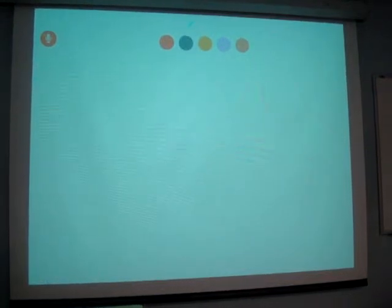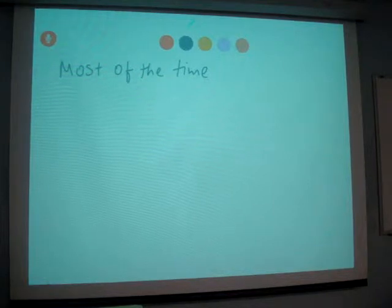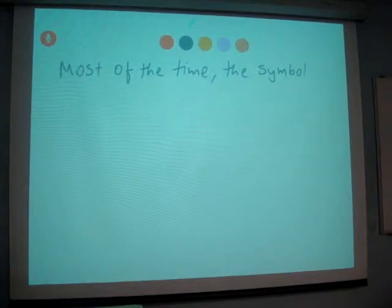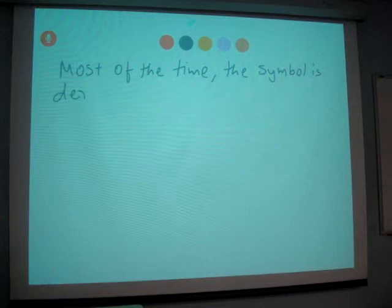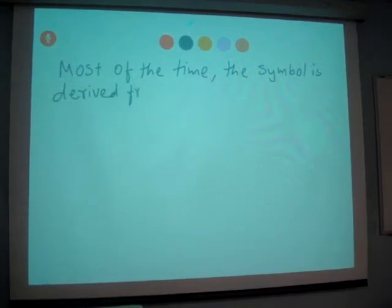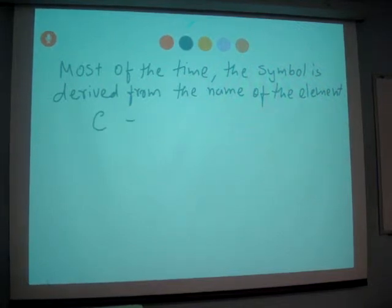And most of the time, the symbol is derived from the name of the elements. For example, C is a symbol for carbon. So that way it symbolizes.